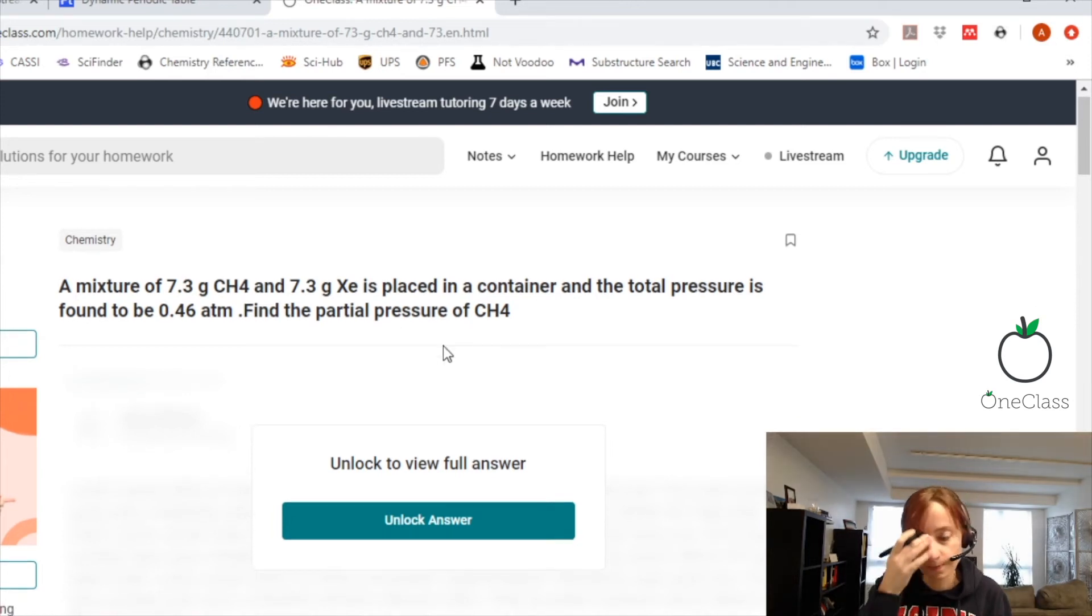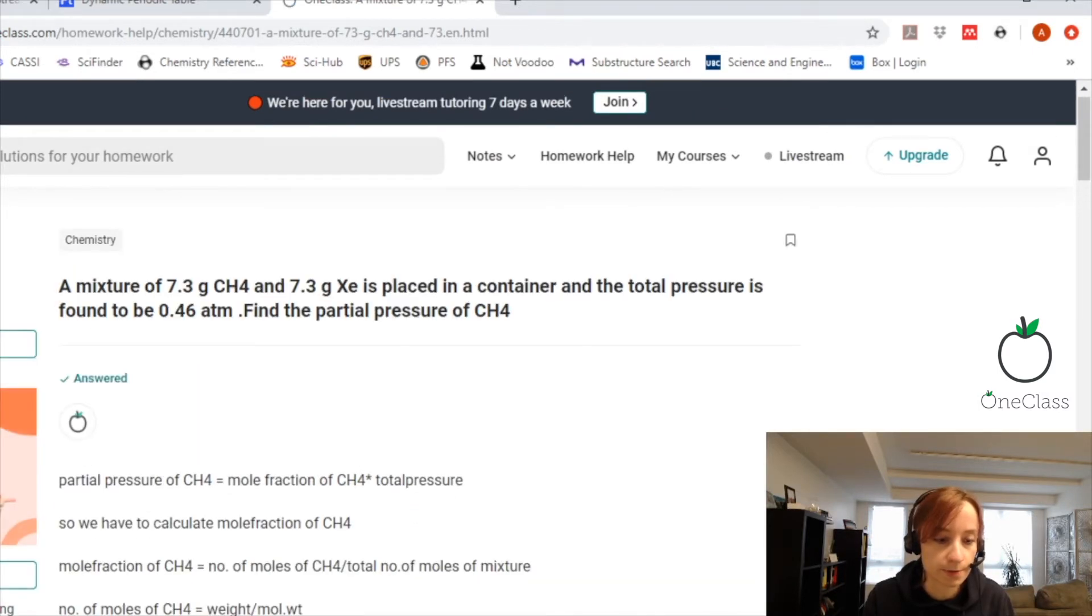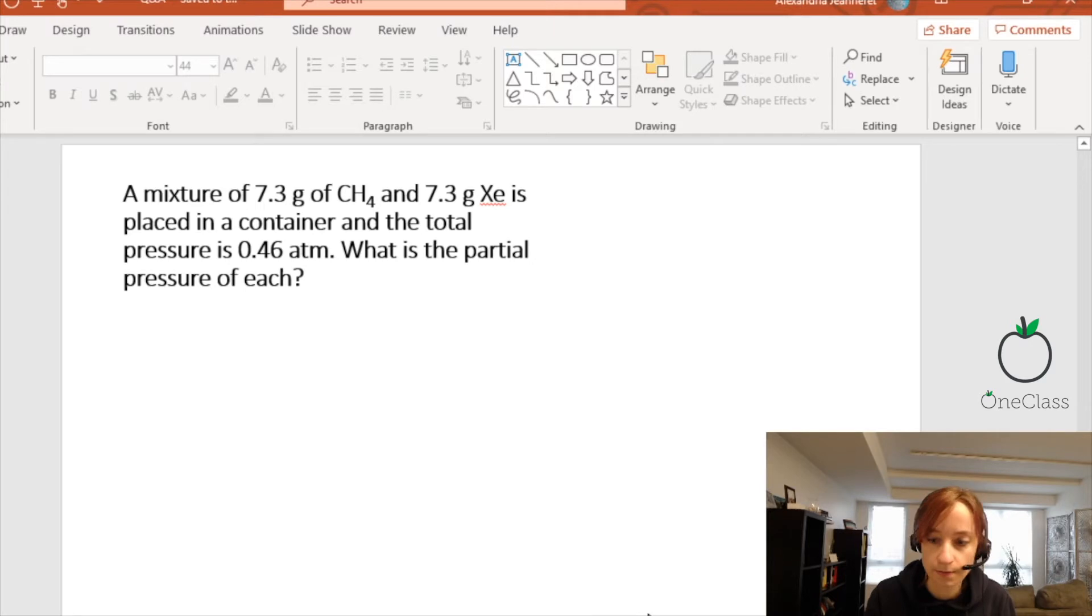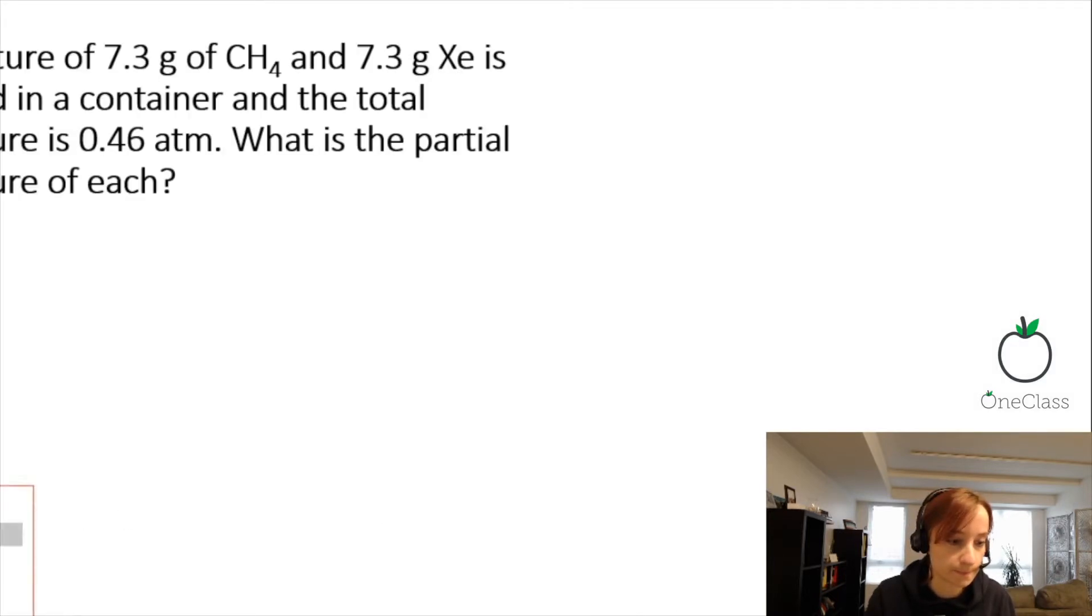This is going to deal with gases instead. I'll flip to the PowerPoint so I can draw it out. So the question says, a mixture of 7.3 grams of methane and 7.3 grams of xenon is placed in a container, and the total pressure is 0.46 atmospheres. What is the partial pressure of each?